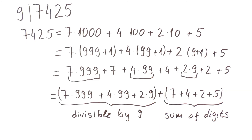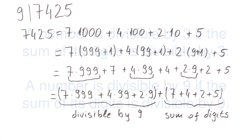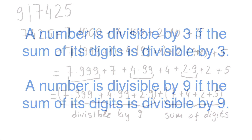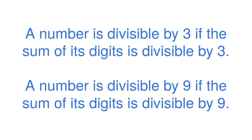And in the same way, we could show divisibility by 3. Therefore, a number is divisible by 3 when the sum of its digits is divisible by 3, and a number is divisible by 9 if the sum of its digits is divisible by 9.